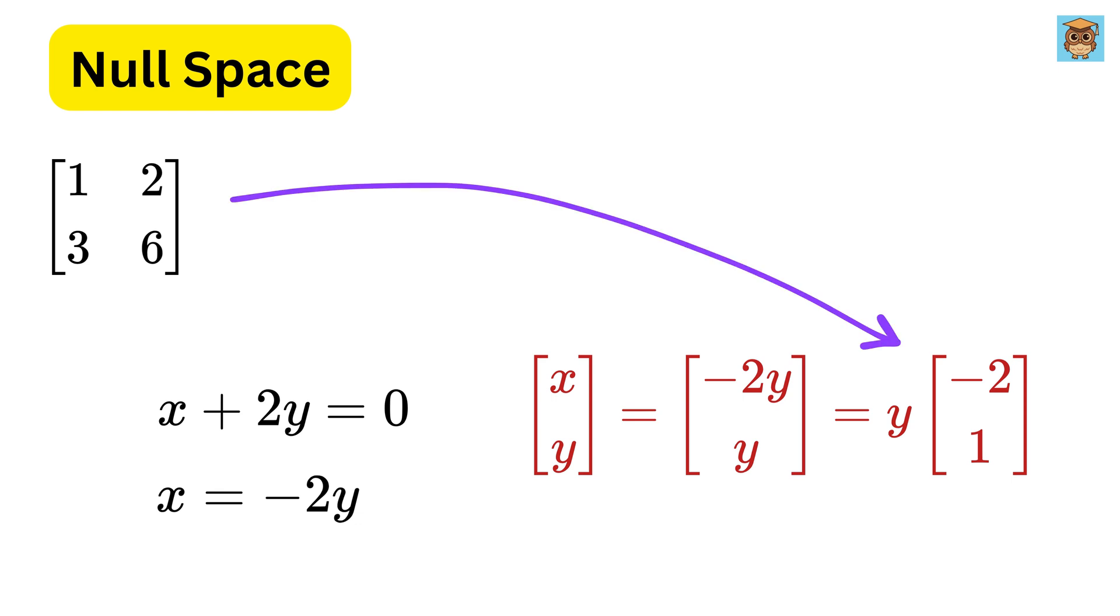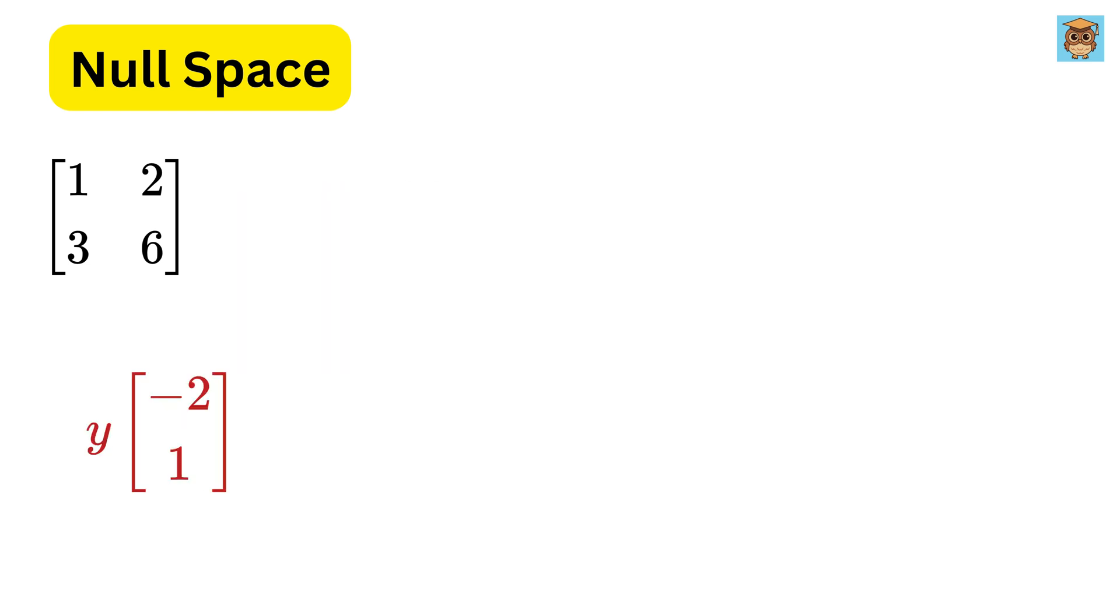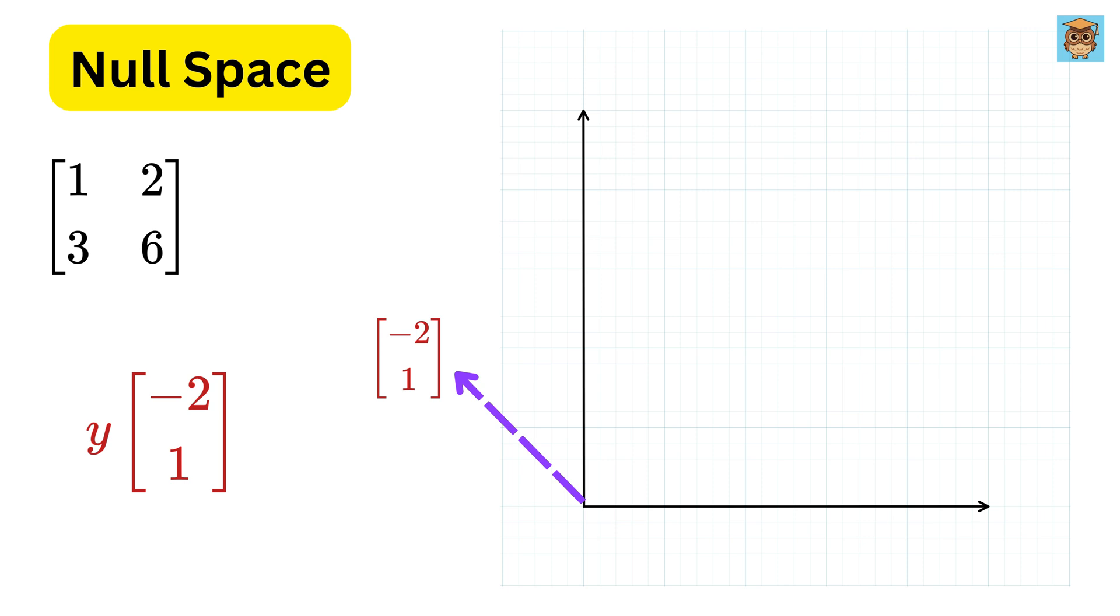This is the null space of matrix A. Minus 2, 1 lies somewhere here. So, any vector that lies along this line, when multiplied with A, will always give us 0, 0.